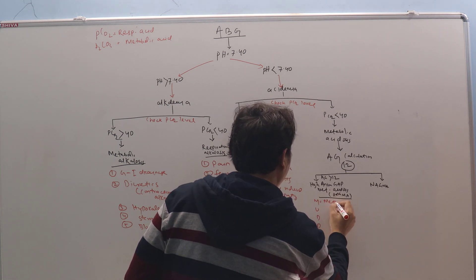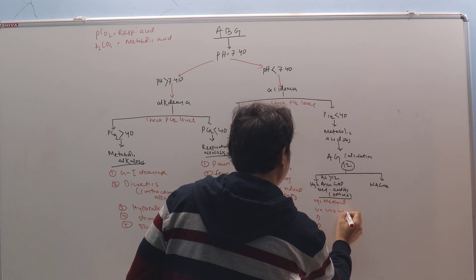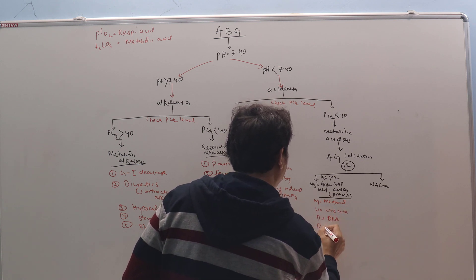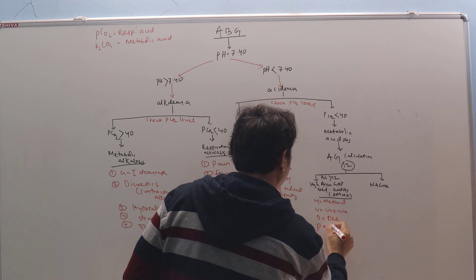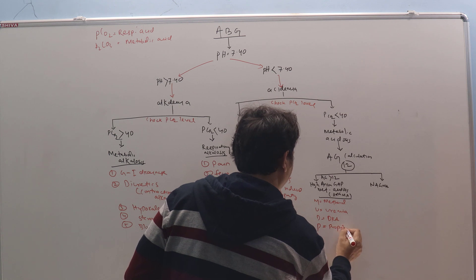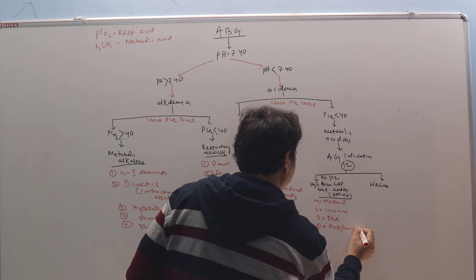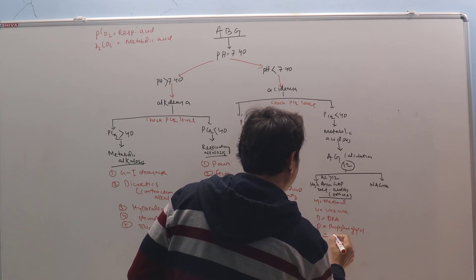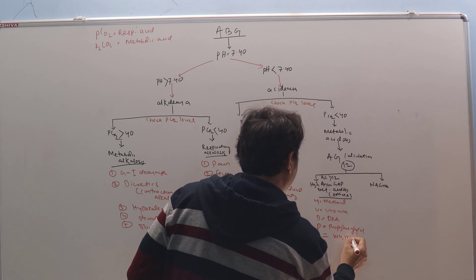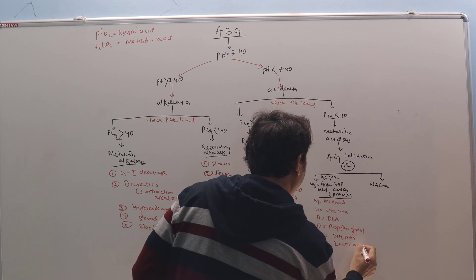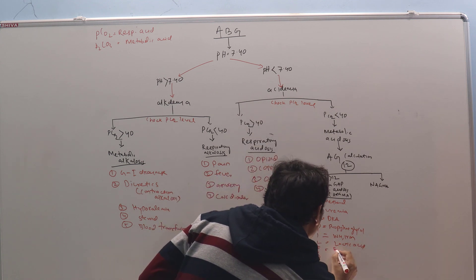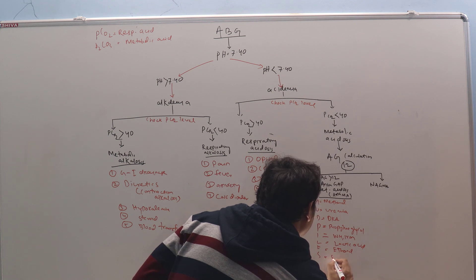Differential diagnosis will be MUDPILES. M: methanol. U: uremia. D: DKA. P: propylene glycol. I: INH, iron. L: lactic acid. E: ethanol. S: salicylate.